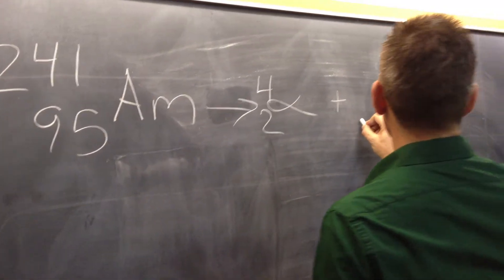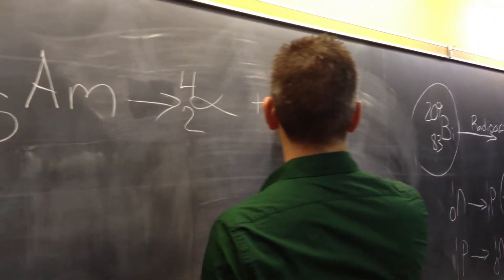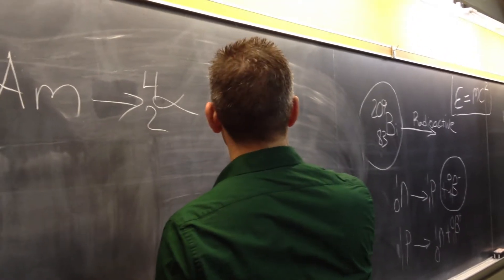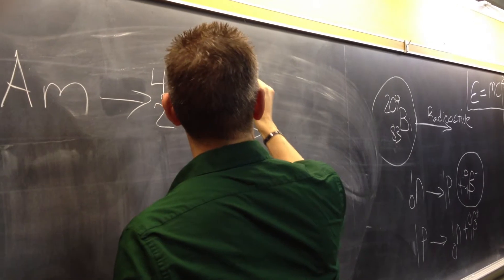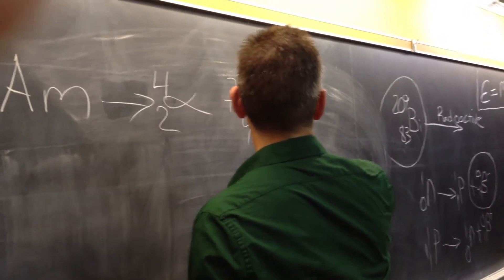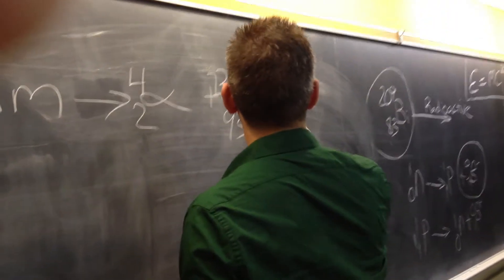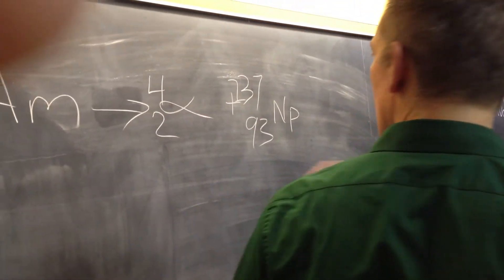Yep. 93. What's this number? Right, 237, which is neptunium. Okay? That's an example of alpha emission.